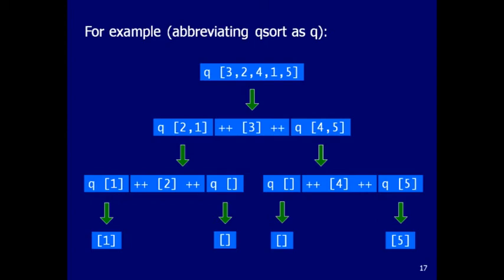We apply equational reasoning to understand how quicksort works — just unfolding each step until we have the final answer. Abbreviating quicksort as Q: it's a non-empty list, so I pick out the first element, quicksort all the smaller ones, quicksort all the bigger ones, and stick x in the middle. For the left sublist starting with 2, I split into smaller and bigger and stick 2 in the middle. For quicksort of [4,5], I do the same with 4.